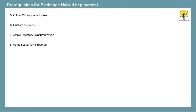The next most important prerequisite is the certificate. You need a certificate for your Exchange server that is issued by a third-party certification authority. For hybrid migration, you cannot use a self-signed certificate. When you create that certificate, you need to add mail.domain.com and autodiscover.domain.com within the subject alternative name of that certificate.